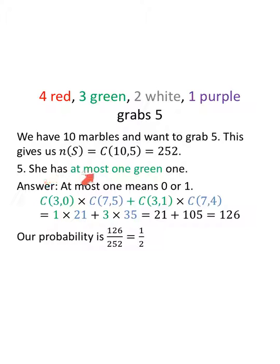Suppose she has at most one green. At most one means we have zero or one. So we break it down. Green. So we have three green, we want zero. And then there are seven others, we want five. Or, so plus, we have three green, we want one. And then out of the seven others, we want four to make our total of five.